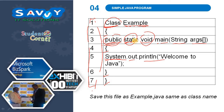static means that without creating an object, the class will be invoked with the help of the keyword static. void means the method returns nothing — it is a data type that returns nothing. The main method is the starting point of the program. In Java we can create any number of methods named main, but the one with the static keyword will be executed first.